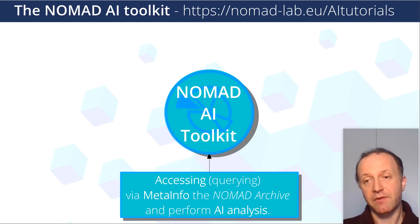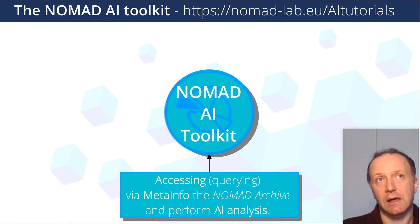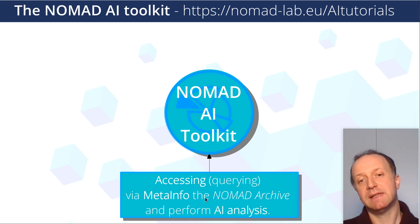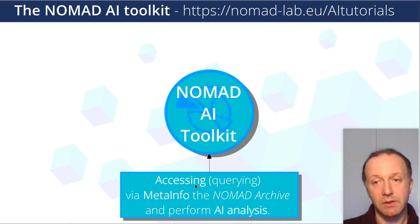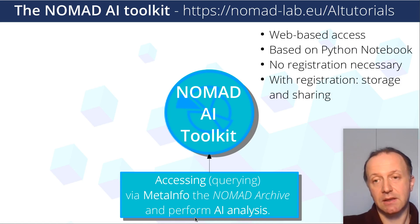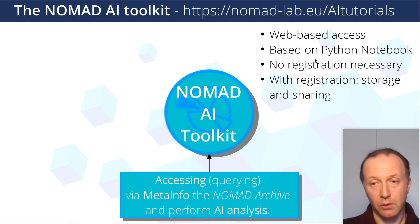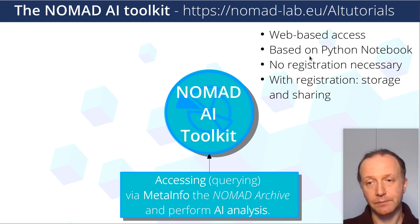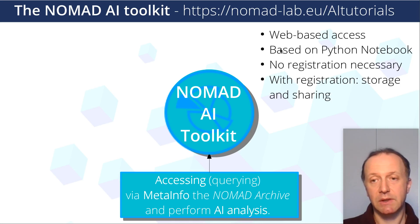The AI toolkit is different things in a common infrastructure. The main starting purpose is to allow accessing the data in the NOMAD archive via our metadata infrastructure, which we'll be presenting in a few slides, and to perform artificial intelligence analysis. For this purpose we have NOMAD notebooks — or more generally Jupyter notebooks — that allow this kind of querying and analyzing. Everything is web-based, meaning the notebooks run in a browser while on our side they run on our server.